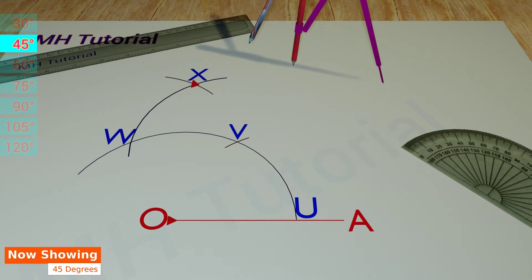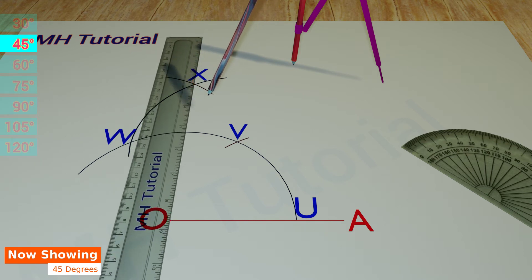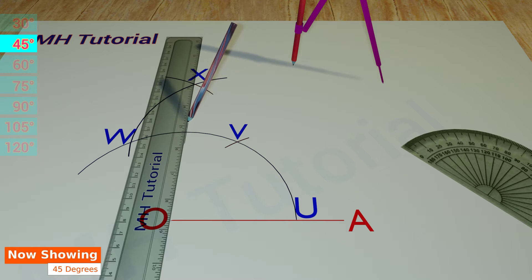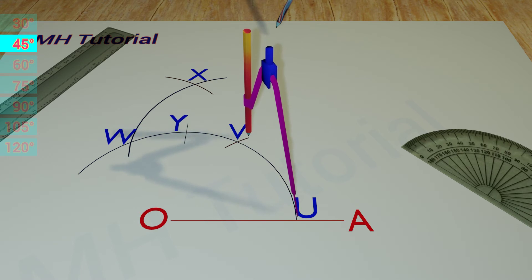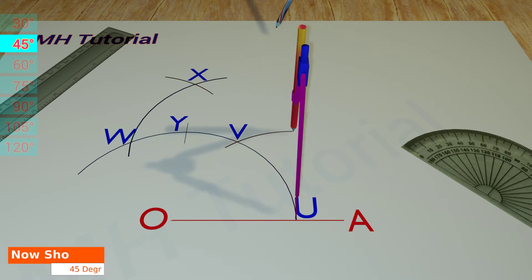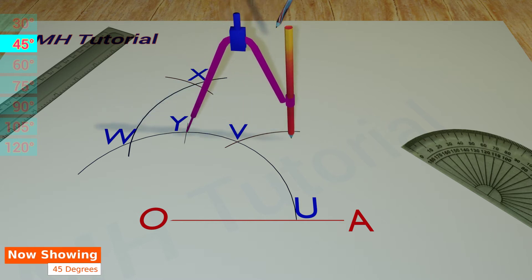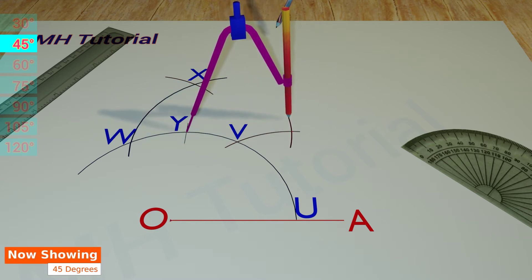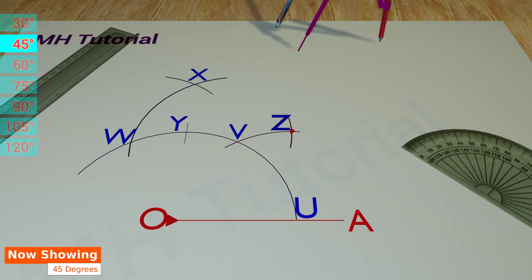Then, align the ruler about point O and point X. A small line is drawn to get the point of intersection against the first circle arc. The point is named Y. Then, two circle arcs of the same radius are drawn from point U and point Y respectively. These two arcs meet at point Z.